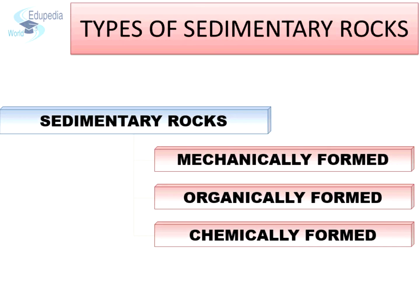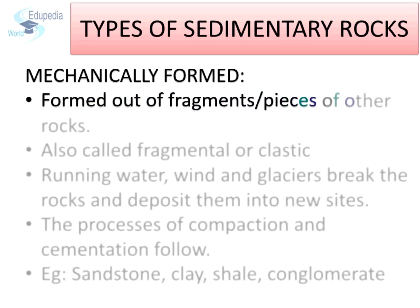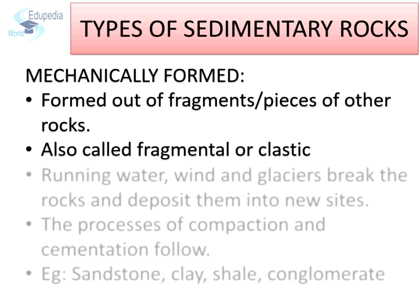Types of sedimentary rocks: sedimentary rocks can be classified as mechanically formed, chemically formed, and organically formed sedimentary rocks. Mechanically formed sedimentary rocks are also called fragmental or clastic rocks, since they are formed out of fragments or pieces of other rocks.